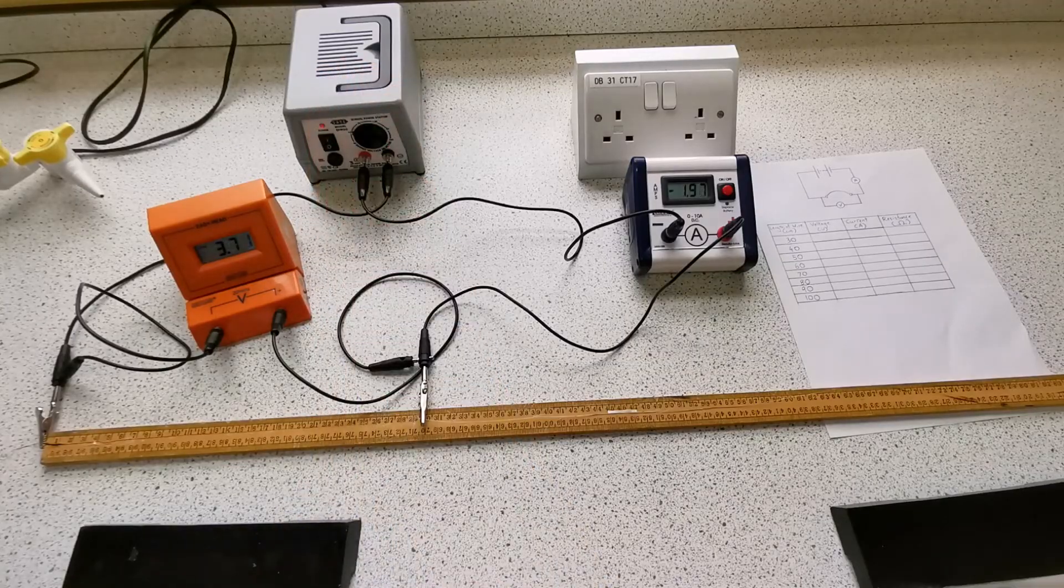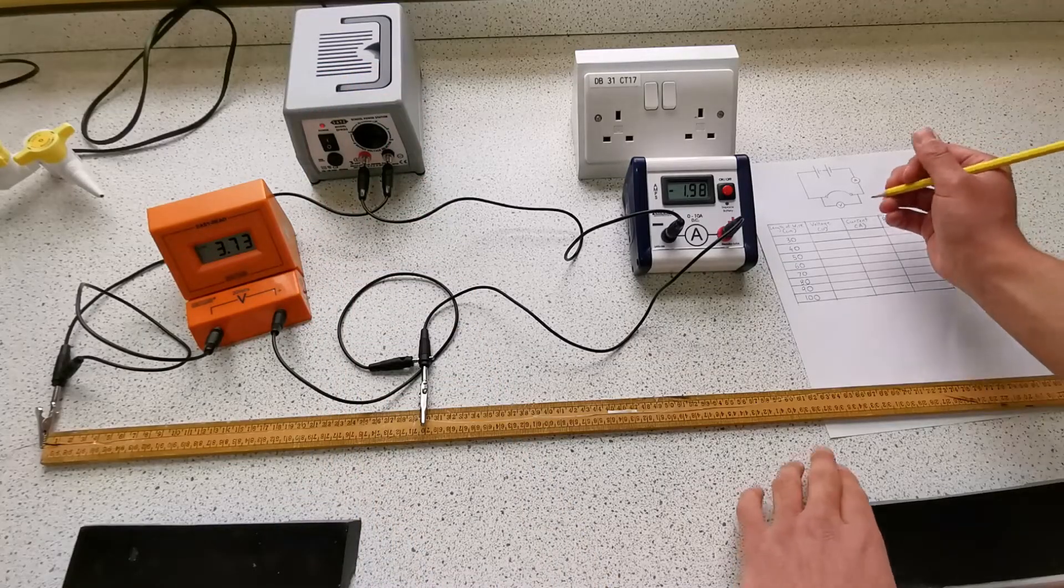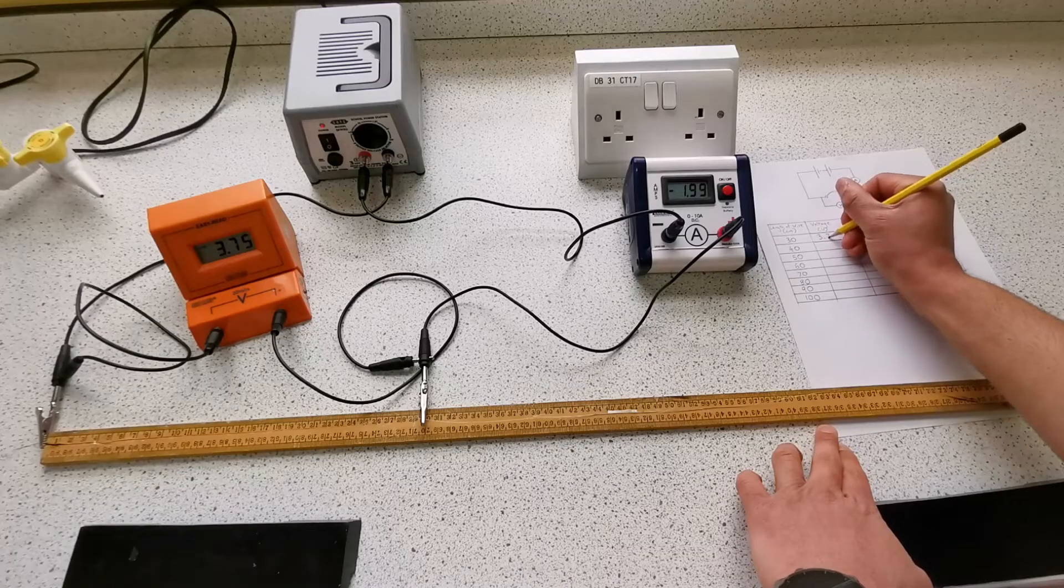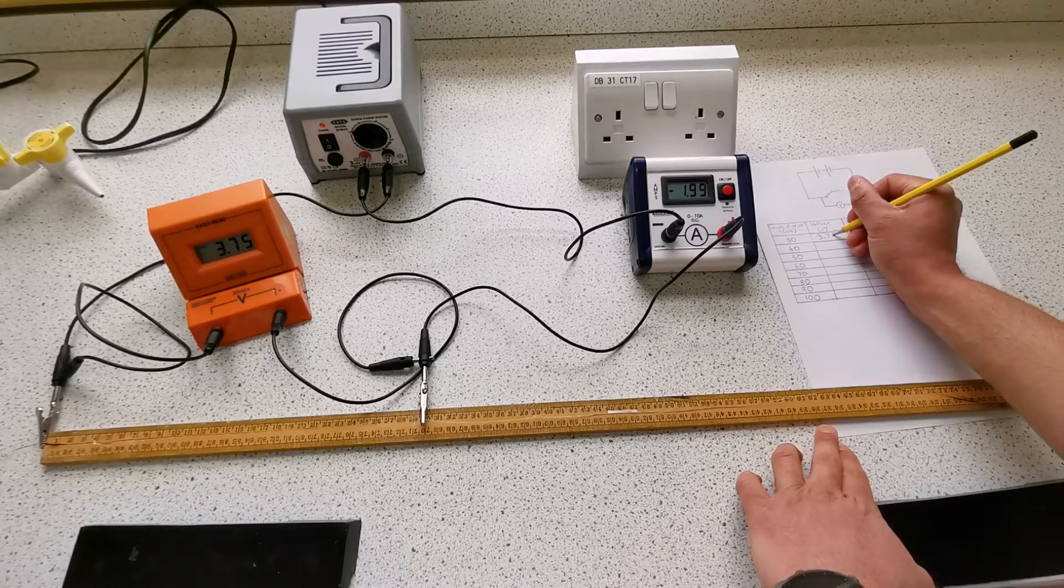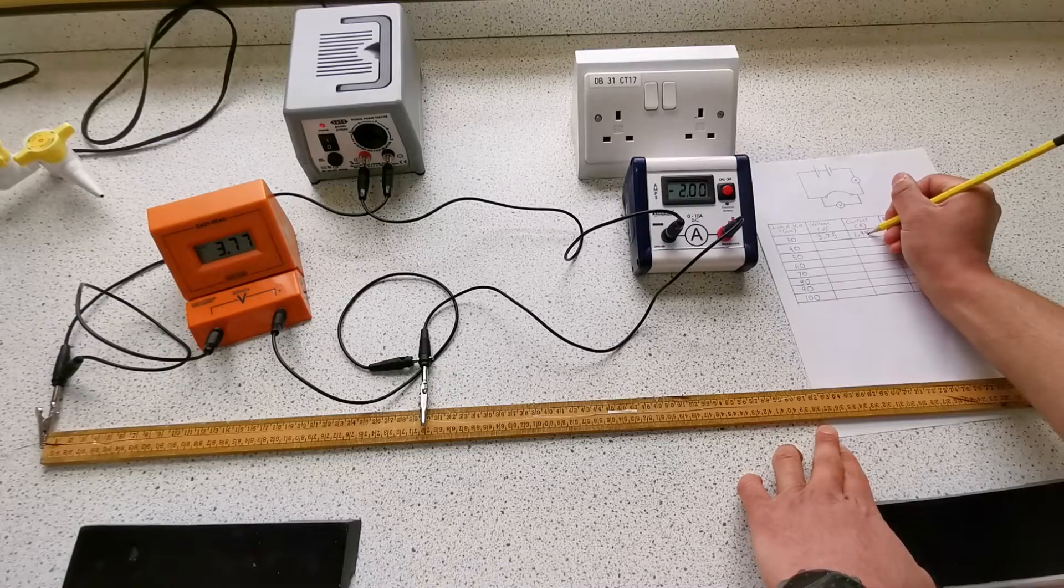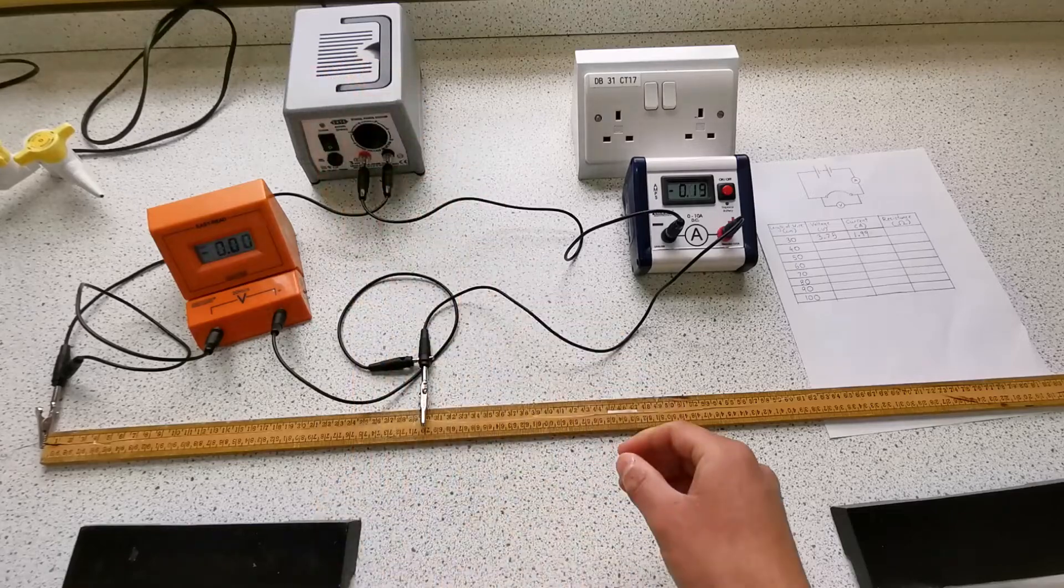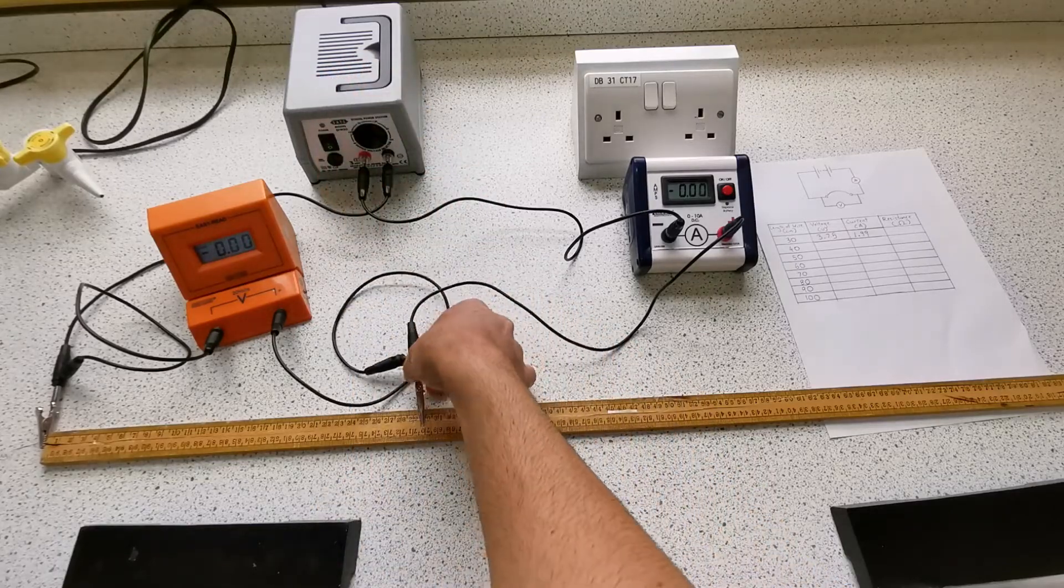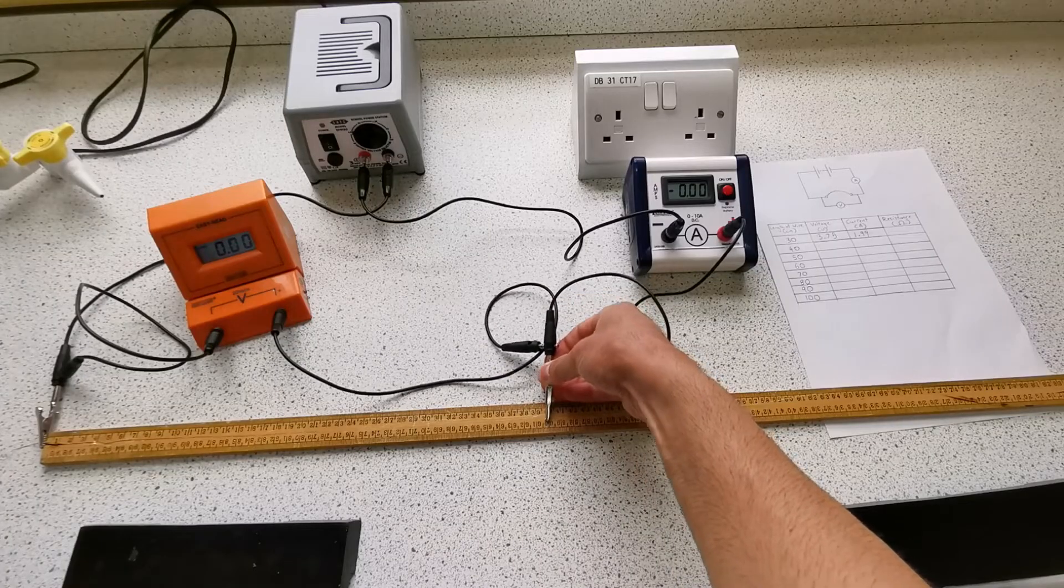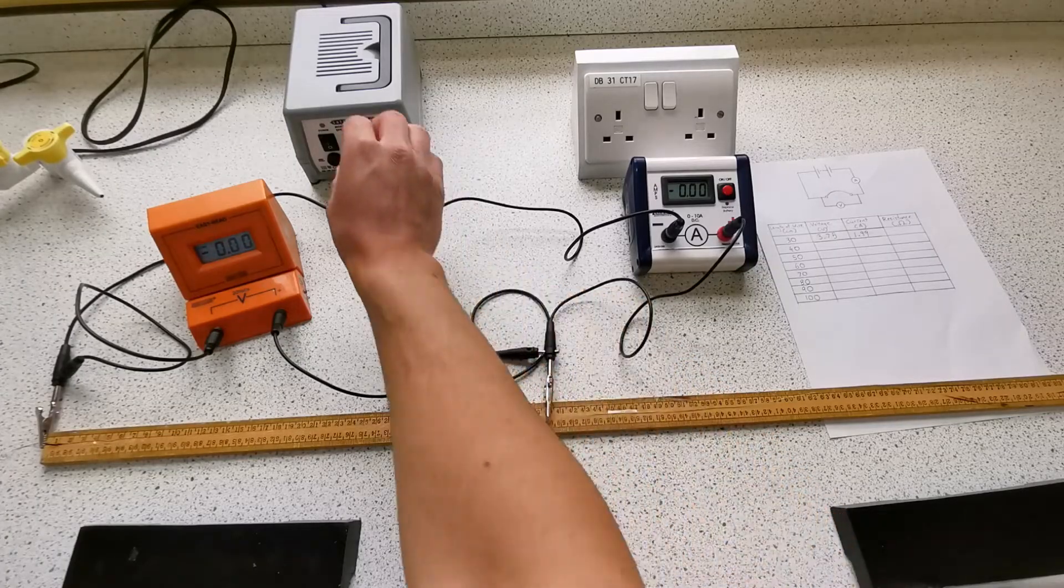So I'm going to turn it on, and as you can see the voltage at 30cm is 3.75 and the current is 1.99, and I'm going to turn it off. I'm going to move the crocodile clip along the wire until we get to 40cm, and then I'm going to do the same thing.